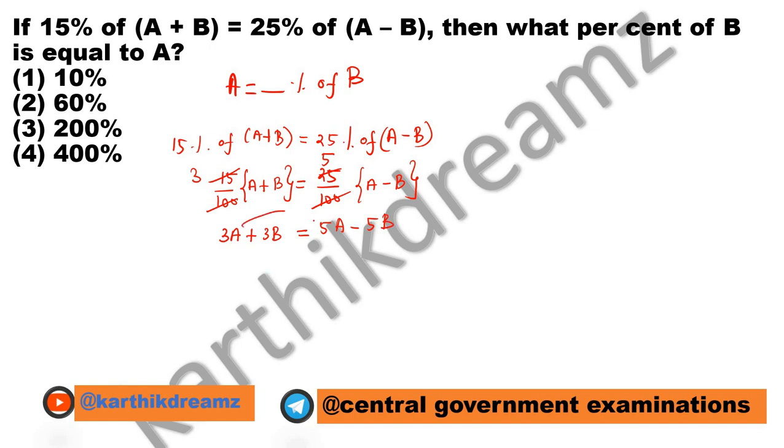Taking A to the other side and B to the other side, we get 5B plus 3B equals 5A minus 3A.